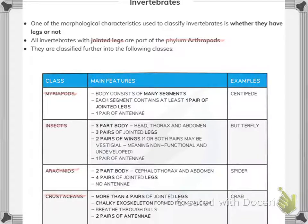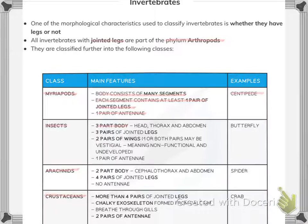Myriapods consist of many segments; each segment contains at least one pair of jointed legs, and they have one pair of antennae. An example is the centipede. Insects have a three-part body — head, thorax, and abdomen — three pairs of jointed legs, two pairs of wings, and one pair of antennae. An example is the butterfly.